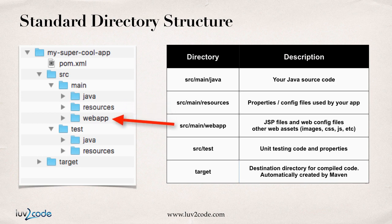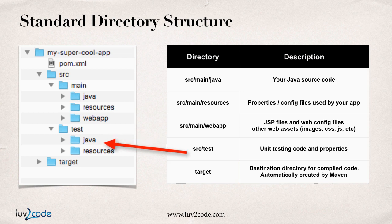There's also a web app directory, and this is where you place your JSP files, any web config files, images, CSS, and so on. There's also a source test directory — this is where you place your unit testing source code and any properties and configuration files used by your unit testing code. And finally, there's a target directory, which is the destination directory for your compiled code and any artifacts that Maven will generate.